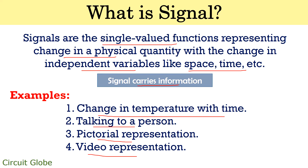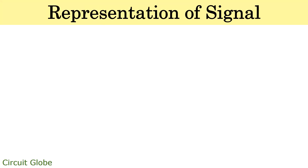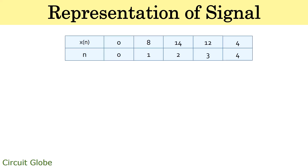A function of a signal may depend on either one or two independent variables, and this categorizes the signal as one-dimensional and two-dimensional respectively. Let's now proceed further to understand how a signal is represented. Suppose we have a string of numbers showing the share value of a particular stock on four consecutive days.